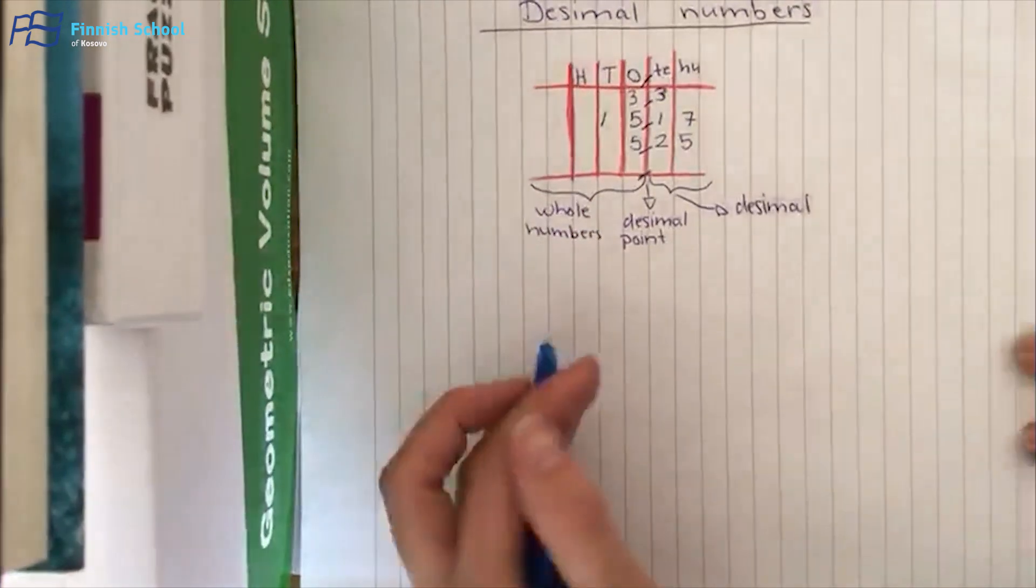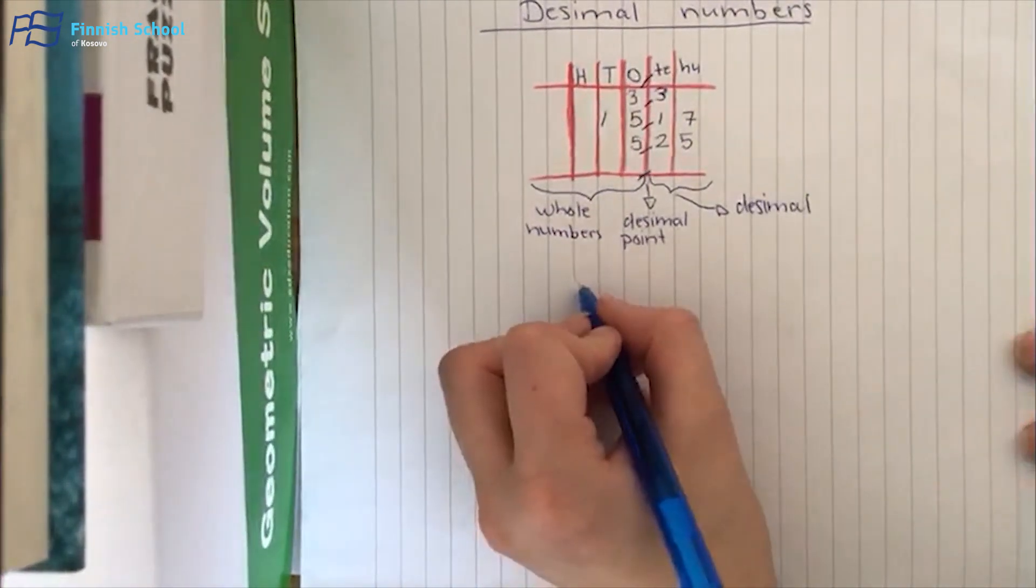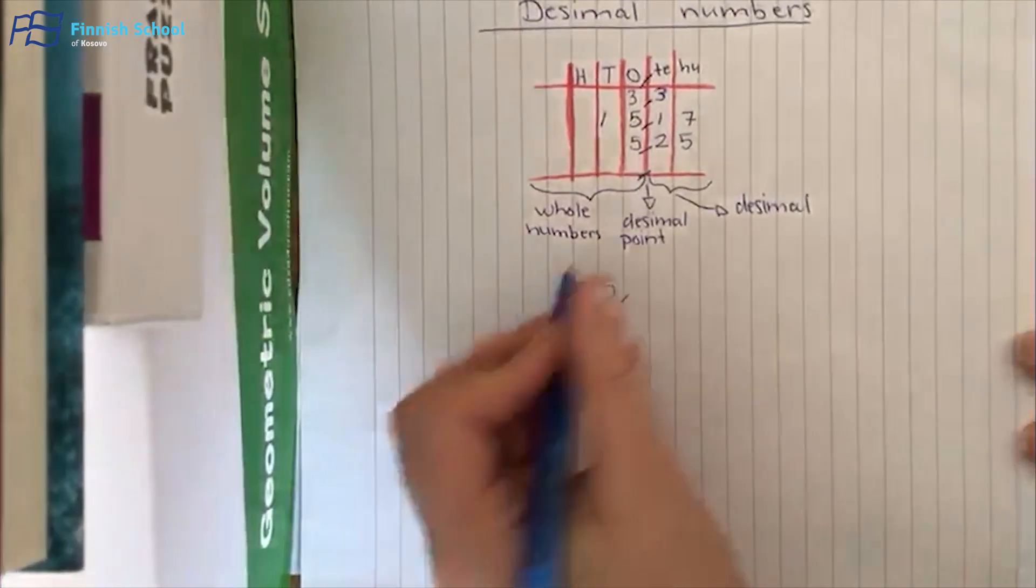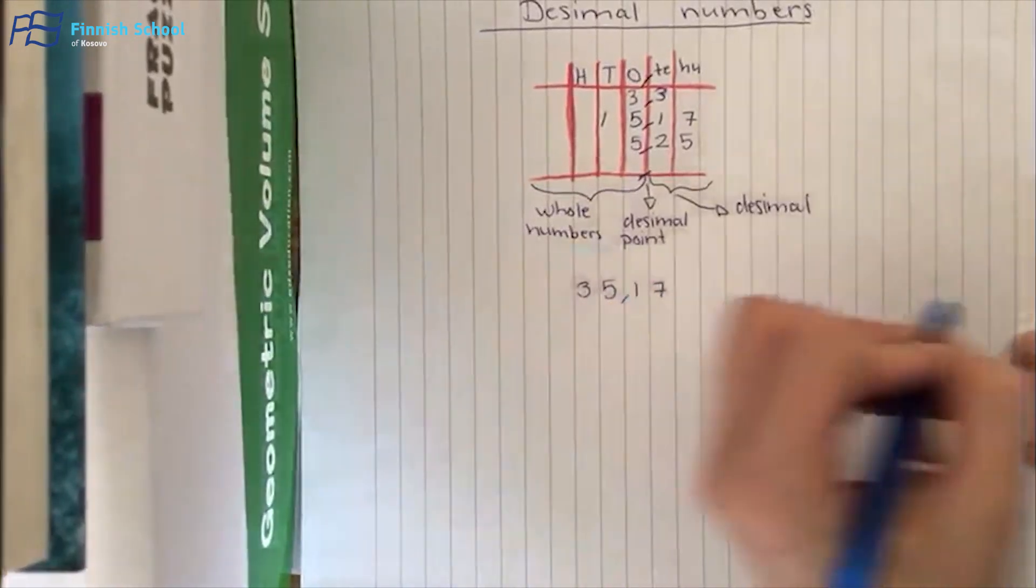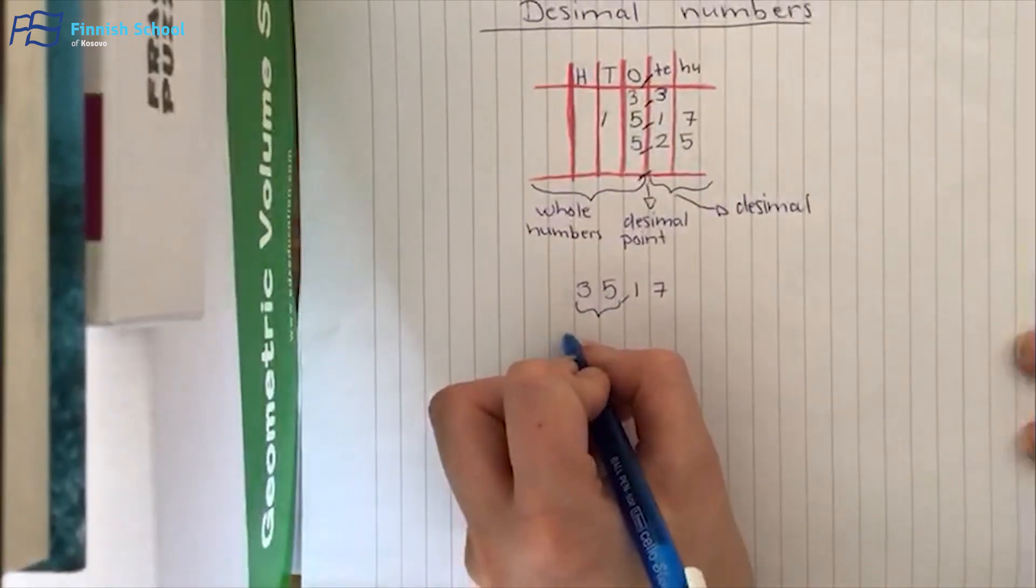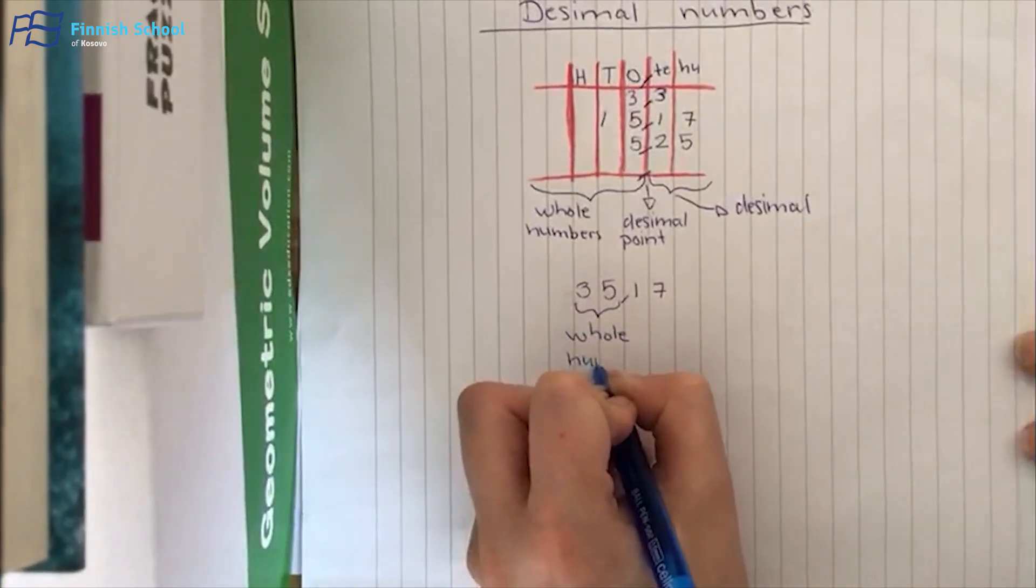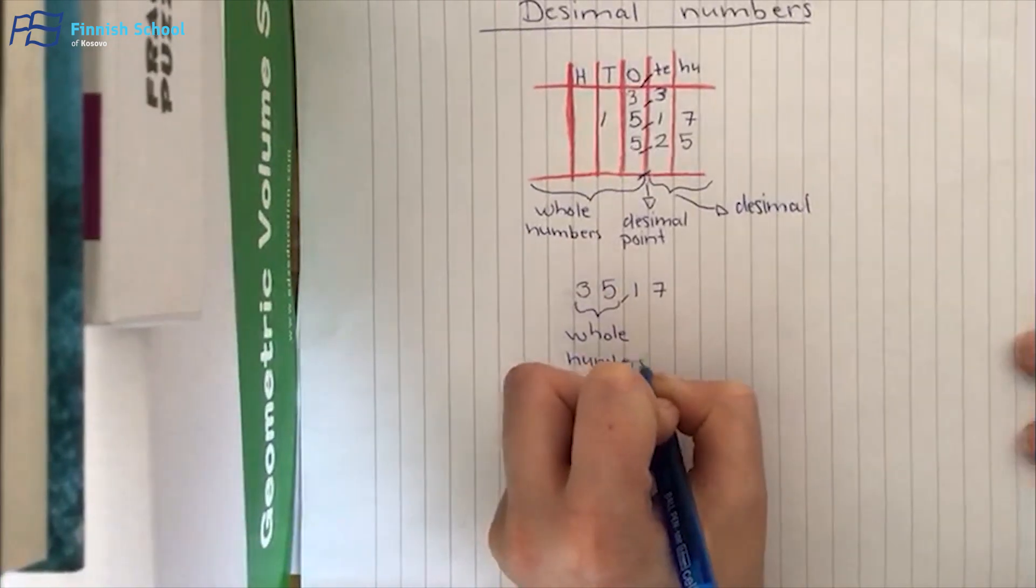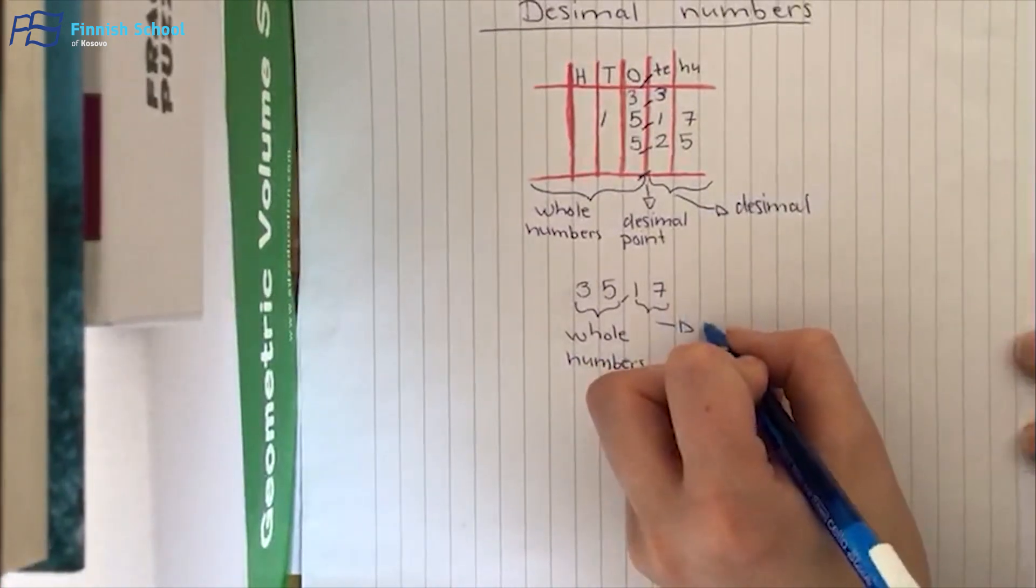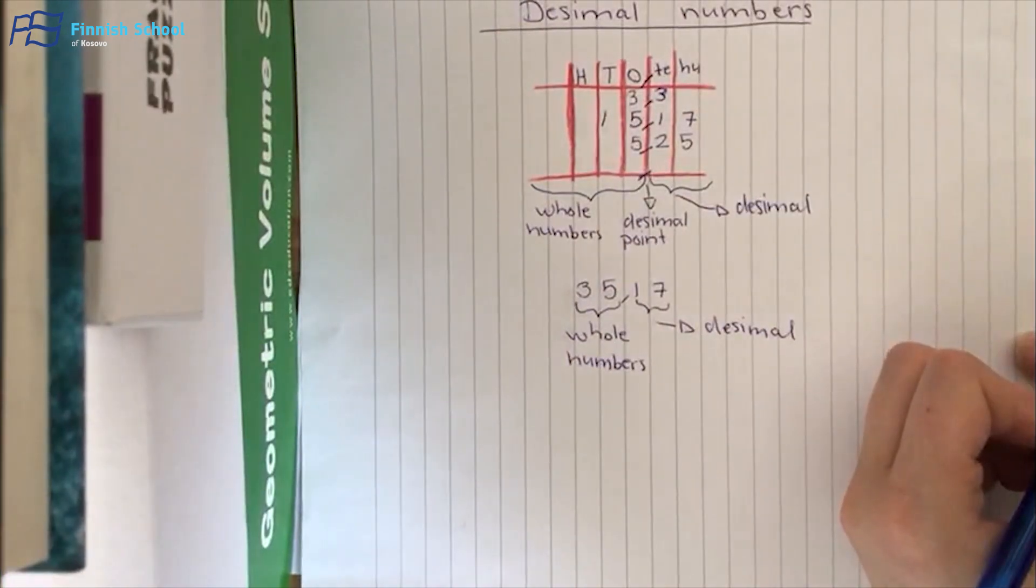So when you have the numbers, example 35 wholes and 17 hundredths, these are the whole numbers and these two are the decimal part.